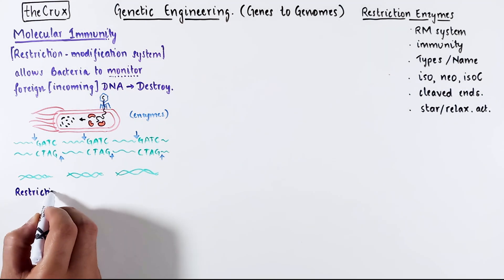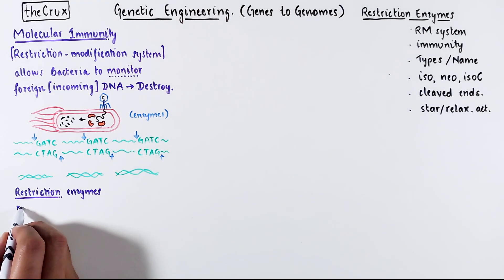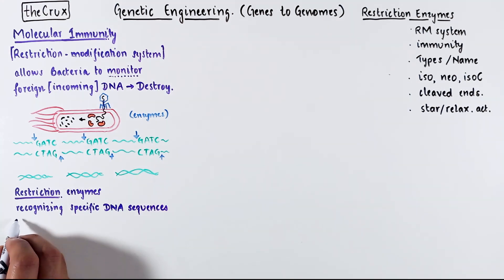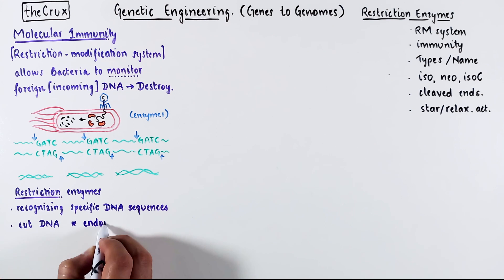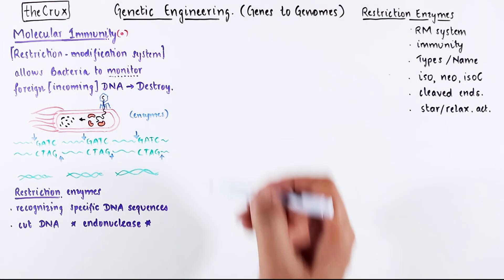The enzymes in question are called restriction enzymes. They recognize specific DNA sequences, and in our example it was GATC, but it could be any other sequence. And after recognition, they will cut the DNA. This also means that the restriction enzyme is a class of endonucleases.